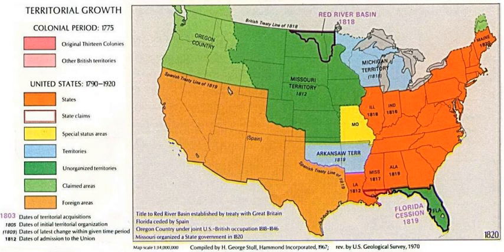Earlier, on February 4, 1820, Representative James Tallmadge, Jr., a Jeffersonian Republican from New York, submitted two amendments to Missouri's request for statehood, which included restrictions on slavery. Southerners objected to any bill which imposed federal restrictions on slavery, believing that slavery was a state issue settled by the Constitution.